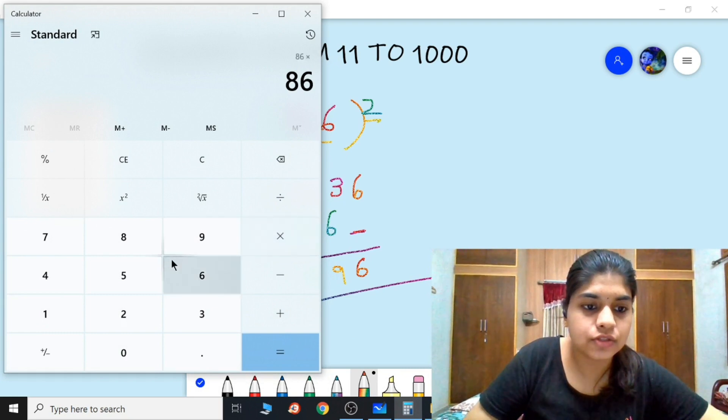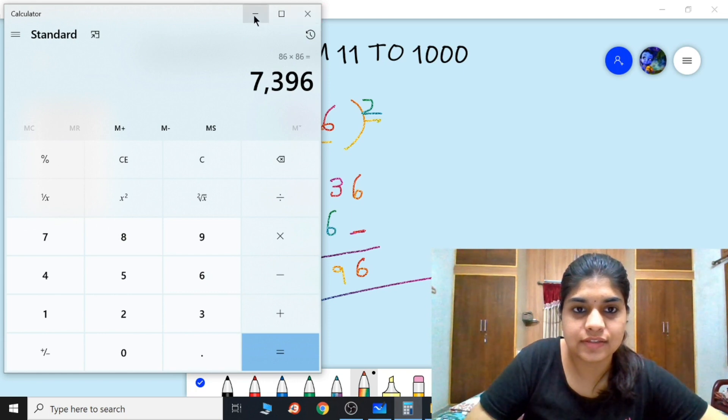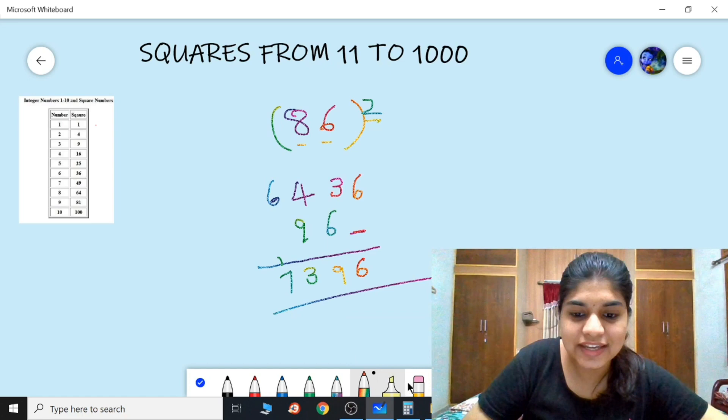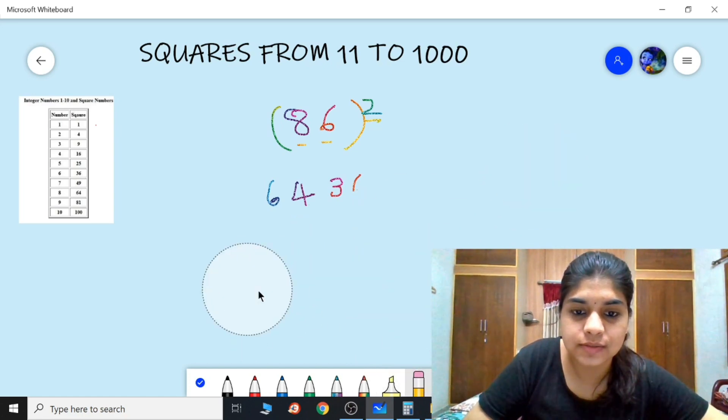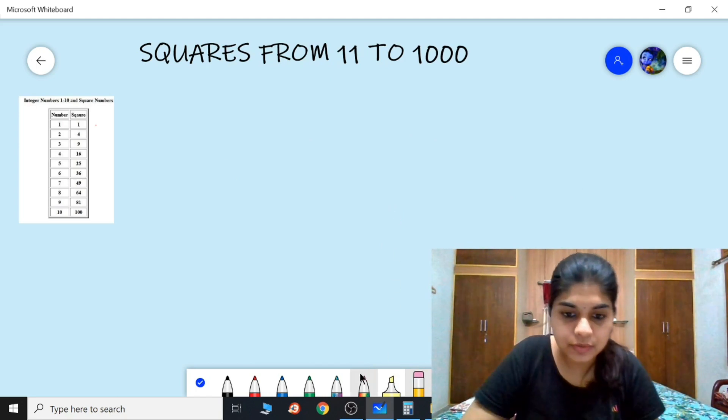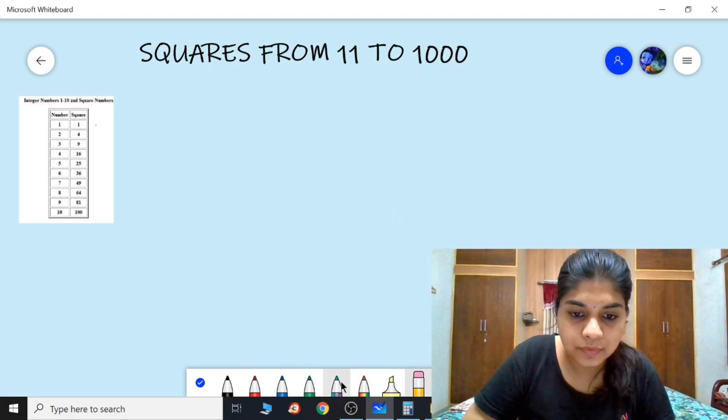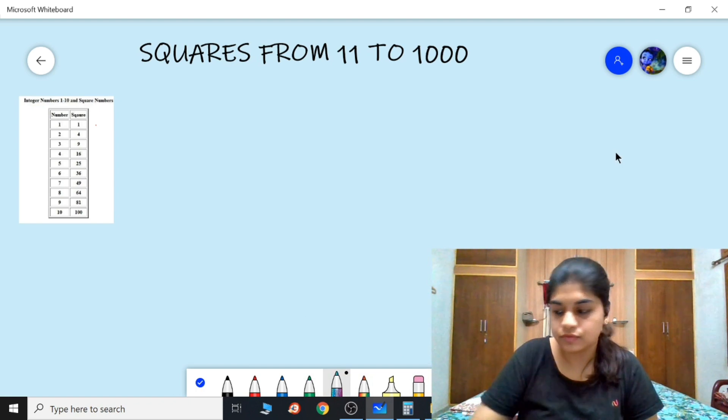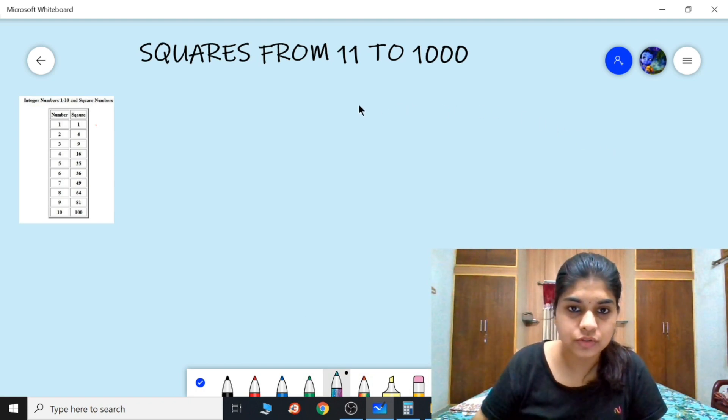86 into 86 is 7396, so that's the answer. Now let's take larger numbers, that is three-digit numbers. We're going to do the same thing here.